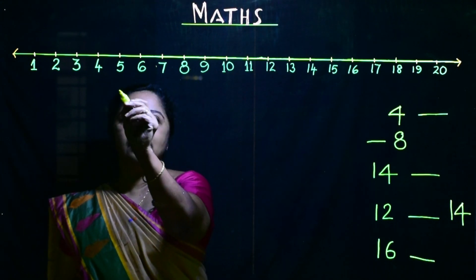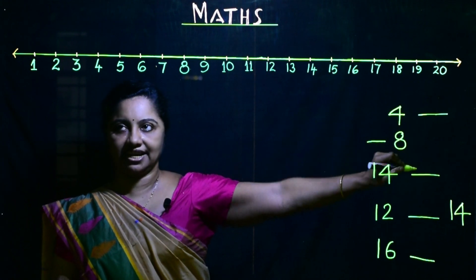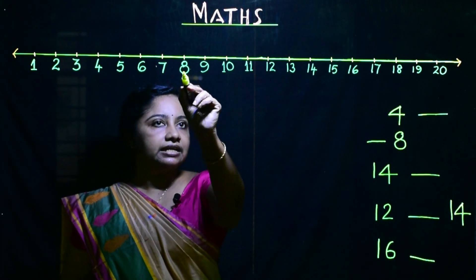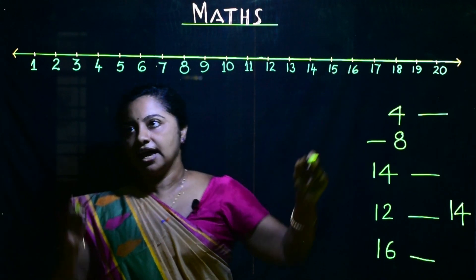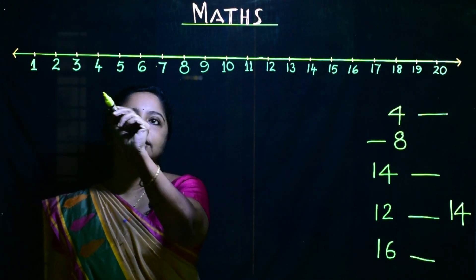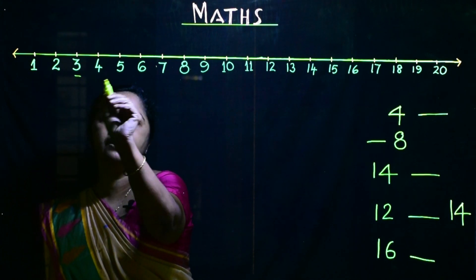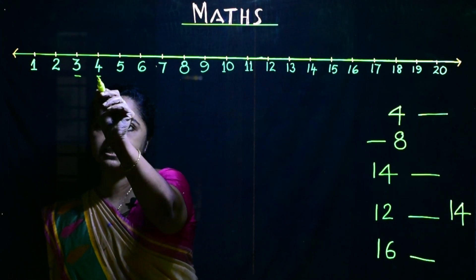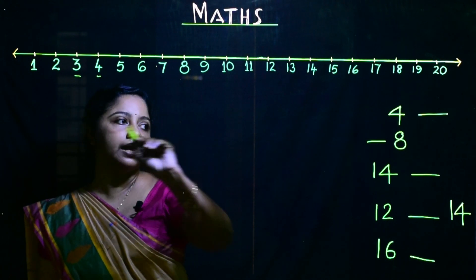Before that, look — this is number 5. This side is the right side and this side is the left side. On the right side, the value of numbers is increasing, and on the left side the value is decreasing. For example, here is number 3 and here is number 4. Which number is big? 4 is big and 3 is a small number.